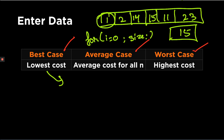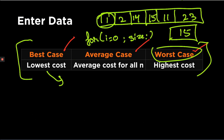The average case is finding the value somewhere in the middle of the array. The worst case is when the number, like 15, does not exist in the array at all, so you traverse every element but never find it. These three cases — best, average, and worst — are independent of the notations we have discussed so far, which are Big O, Omega, and Theta.